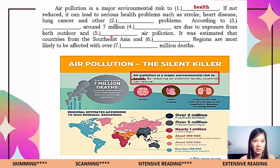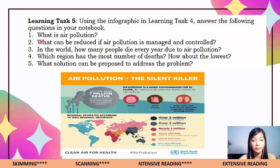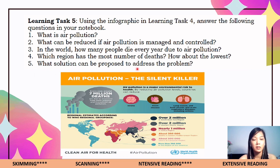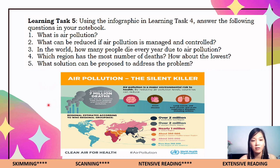For Learning Task Number Five: using the infographic from Learning Task Four, answer the following questions in your notebook. Number one, what is air pollution? Number two, what can be reduced if air pollution is managed and controlled? Number three, how many people die every year due to air pollution worldwide? Number four, which region has the most number of deaths, and which has the lowest? Number five, what solution can be proposed to address the problem? You will find the answers using the same infographic from Learning Task Four.